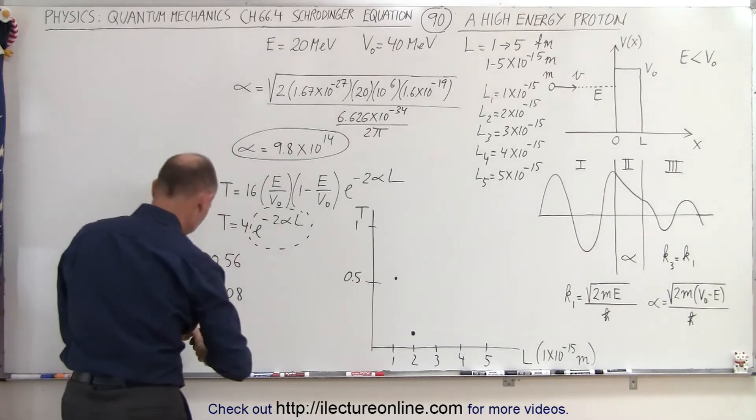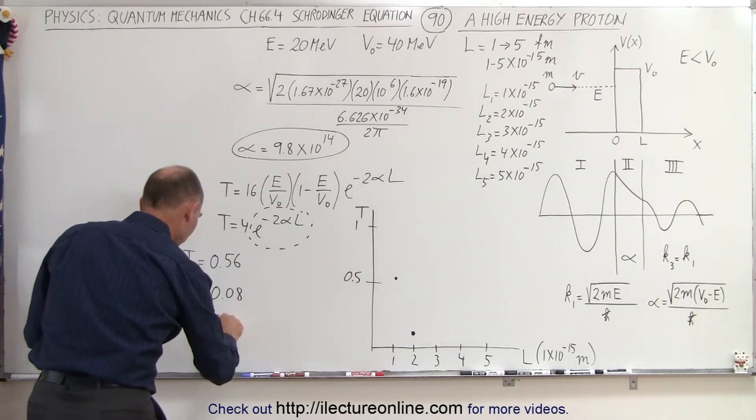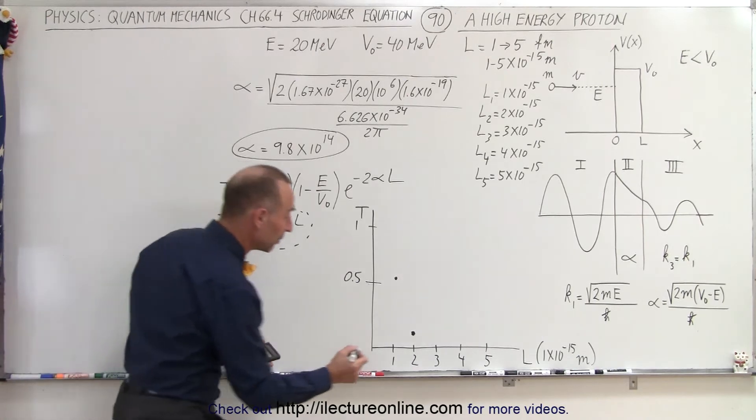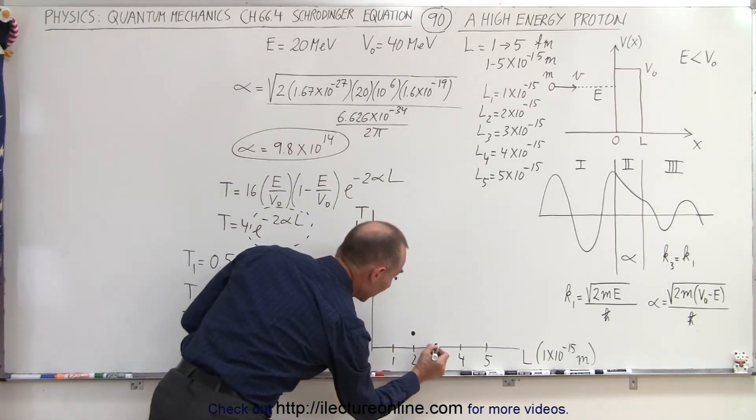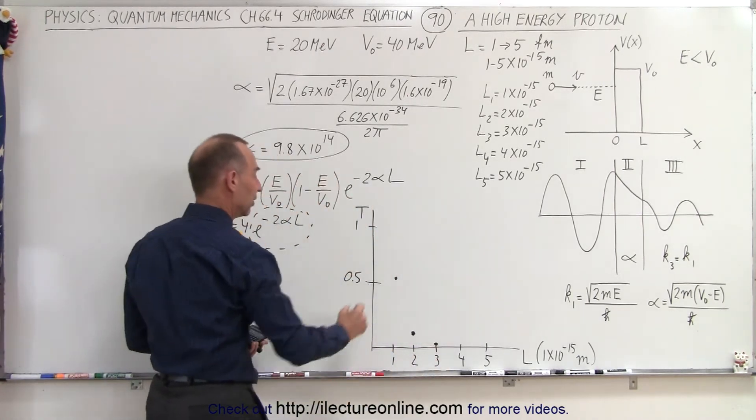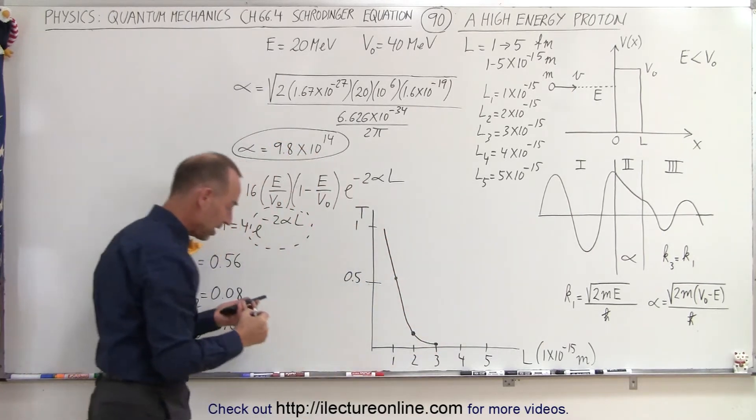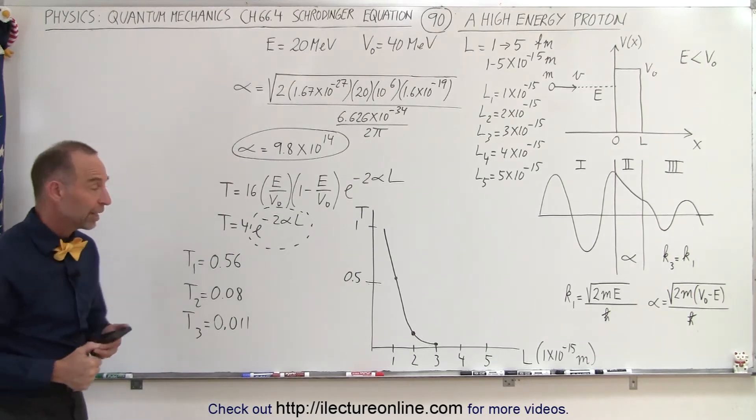And that gives us a probability of about 0.011. So slightly over 1% probability will make it through. So now we're way down here. You can see that the probability drops off very, very, very quickly as the width of the barrier increases.